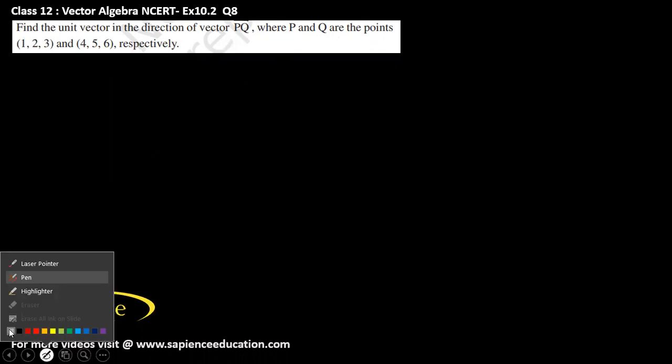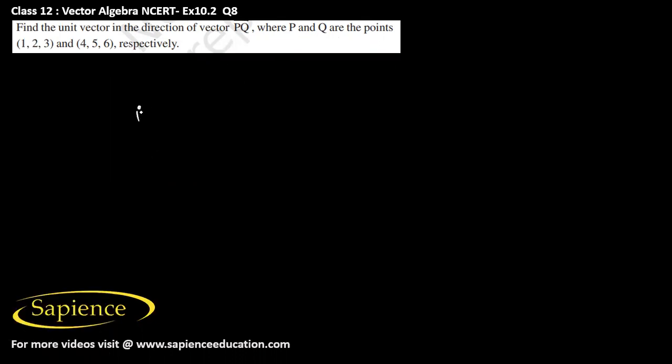Here it has been told to find the unit vector in the direction of the vector PQ where P and Q are these points. Point P is given as (1, 2, 3) and point Q is given which is (4, 5, 6) and we need to find the unit vector in the direction of PQ.